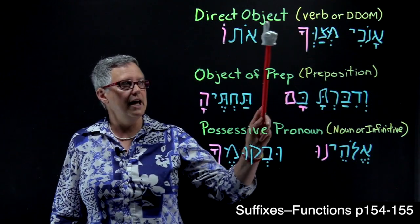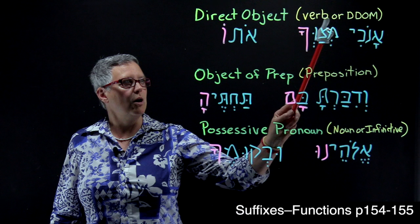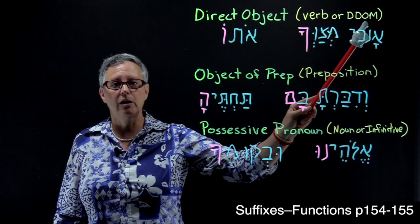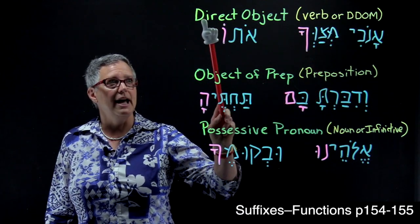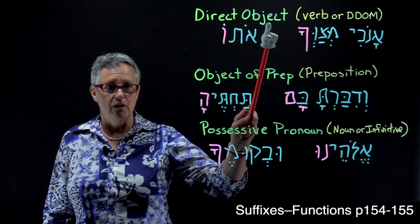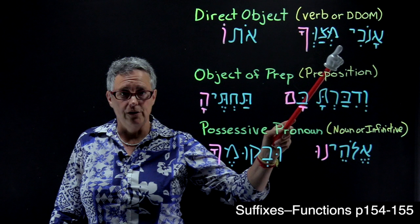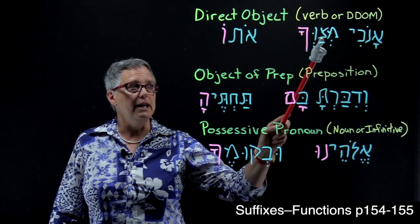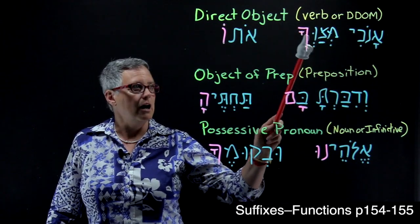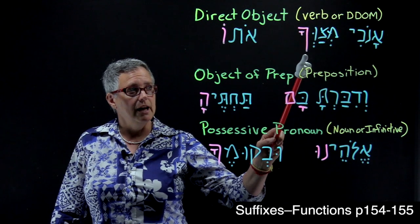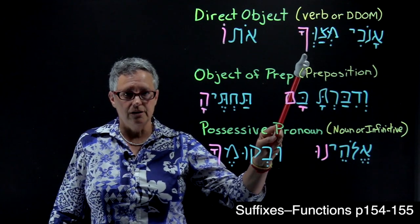If the suffix is attached to a verb or a definite direct object marker, then it is functioning as the direct object of the verb. For instance, this example that you're familiar with from the Shema, anohi metzavcha, the suffix here is a second masculine singular suffix, you,